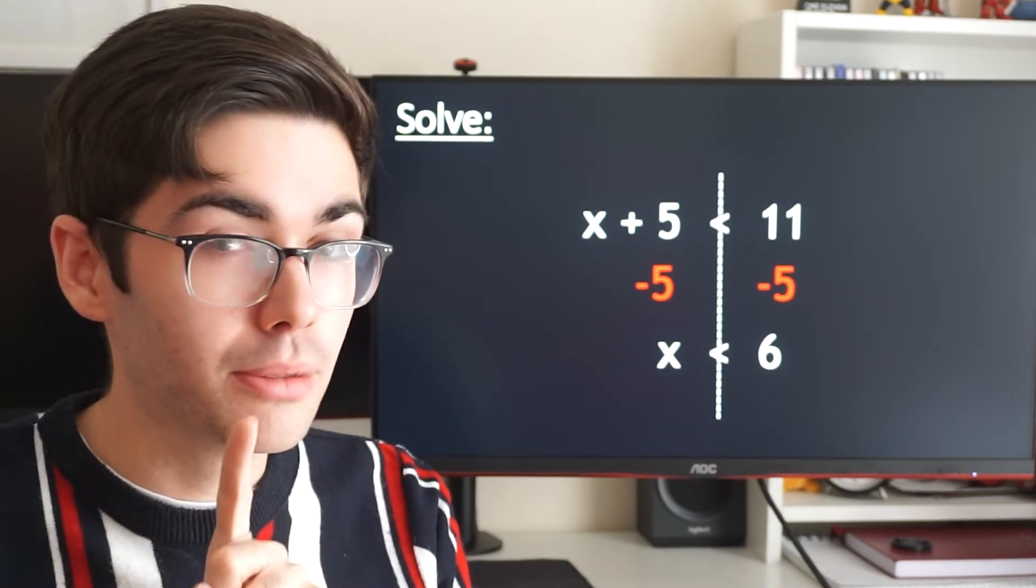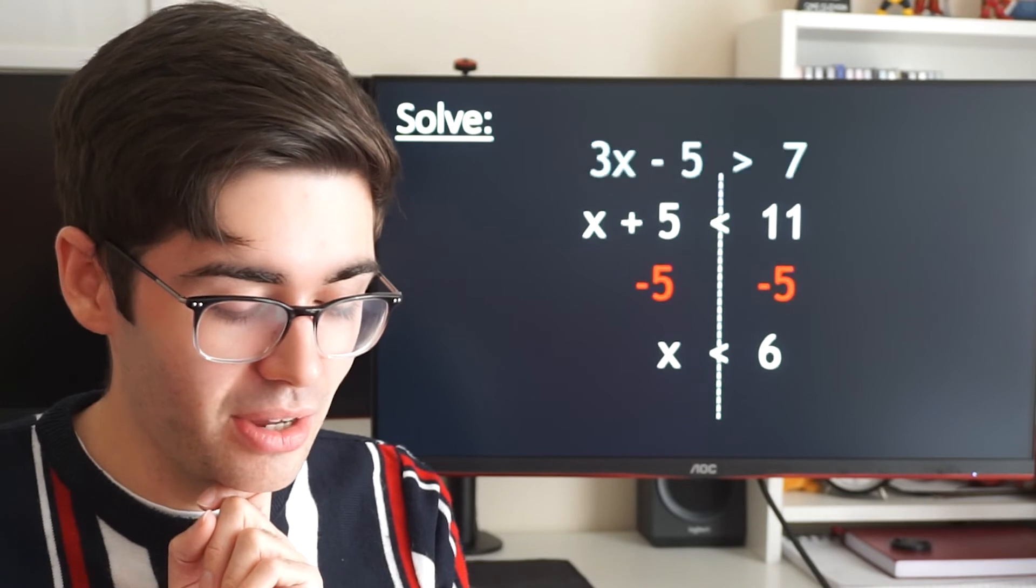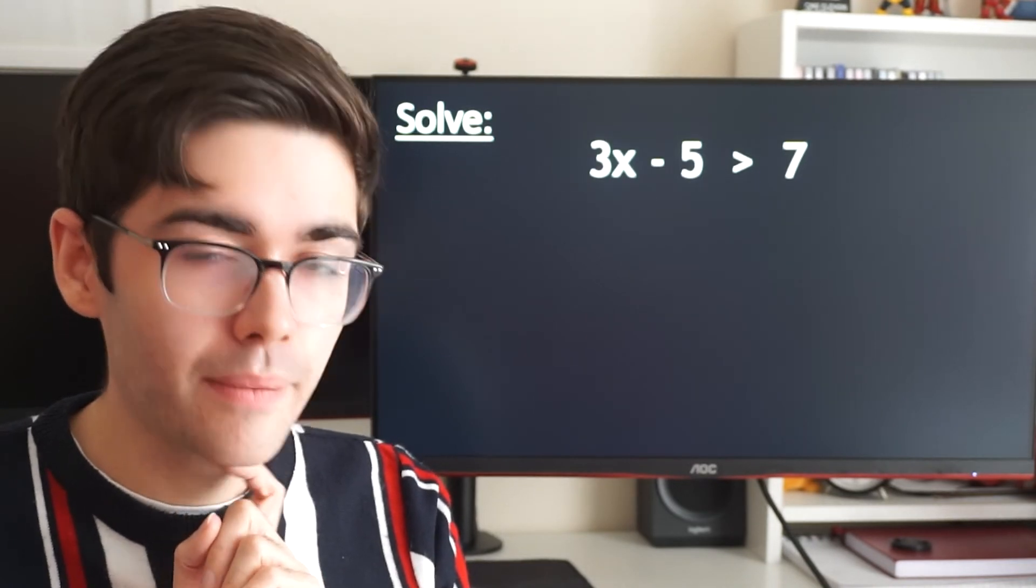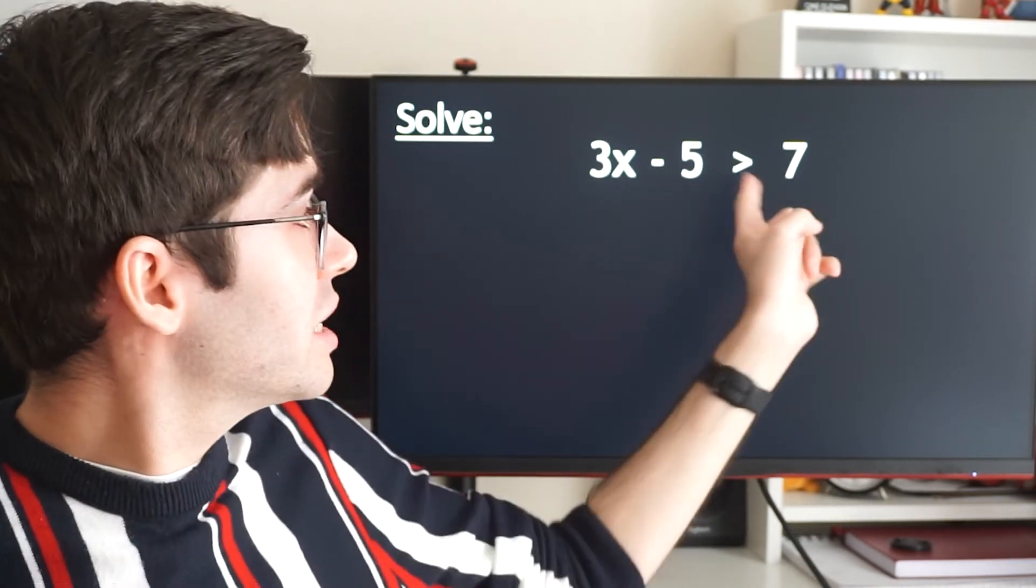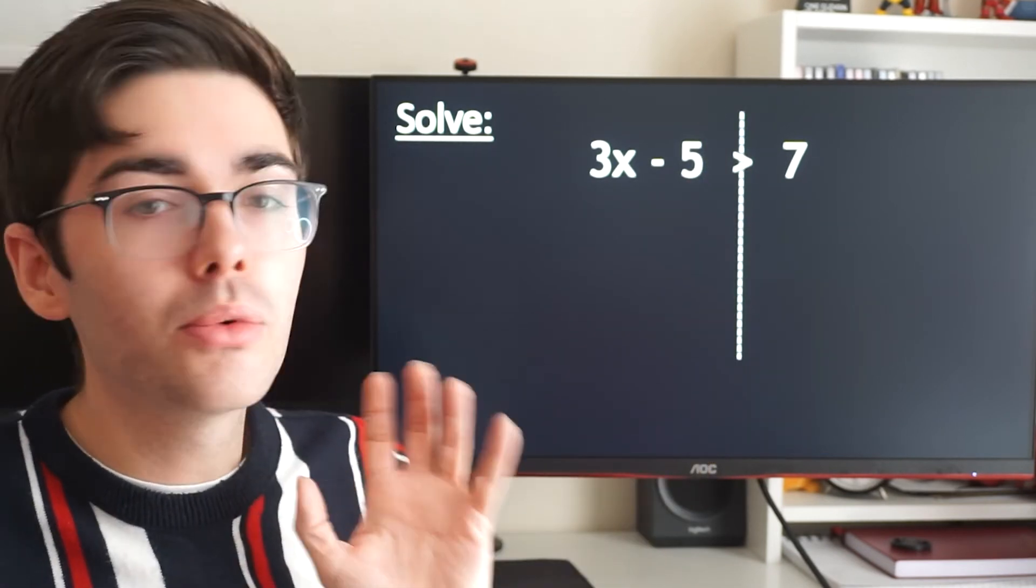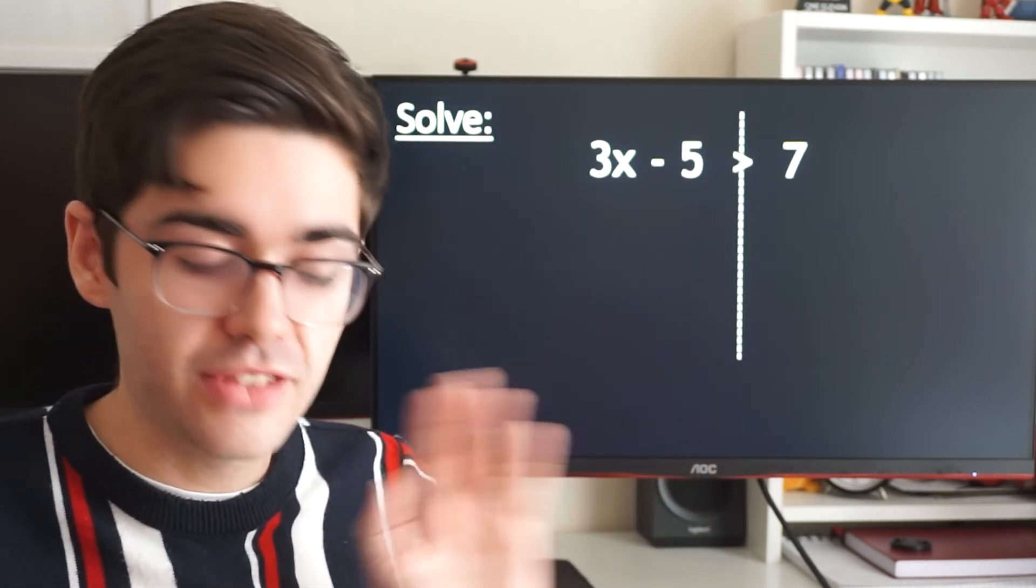Let's look at a slightly more challenging one. You can pause this and have a go yourself if you want to. Here is the inequality. So we're imagining this is our equal symbol. We're going to draw a line down there and then we want to get x by itself on the left-hand side.